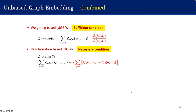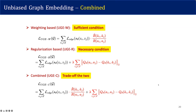So far, we have developed UGE-W, a weighting-based method giving a sufficient condition for unbiased graph embedding, and UGE-R, a regularization-based method giving a necessary condition. We can also combine these two methods to satisfy both sufficient and necessary conditions, which gives us UGE-C, the combined method.